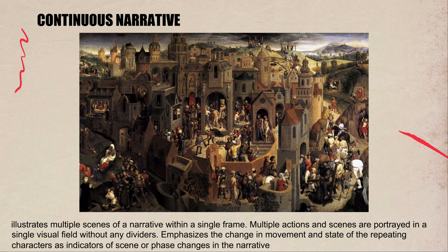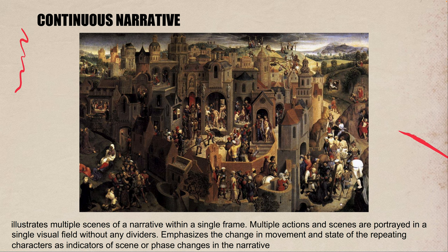Continuous narrative is similar to synoptic but the multiple scenes are not as clearly separated within the single frame. In Hans Memling's Scenes from the Passion of the Christ, at least 23 vignettes are pictured throughout Christ's life in one panel. You see Christ repeated throughout the composition. If you removed the people, it would almost look like one snapshot. The way to identify it as continuous narrative is those repeated characters or elements within the composition.